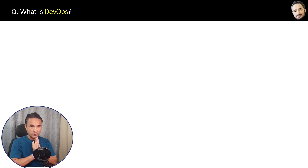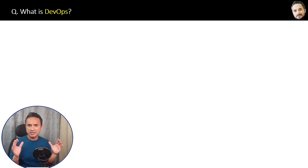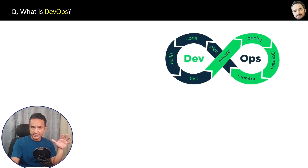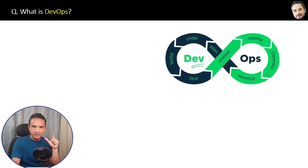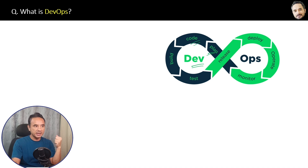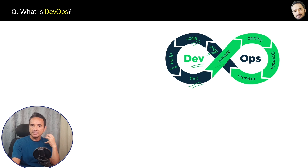What is DevOps? Let's understand with the help of a simple diagram. In DevOps, dev stands for development. Here developers first plan, then write code, then build the code, and then unit test the code. Finally, release the application.